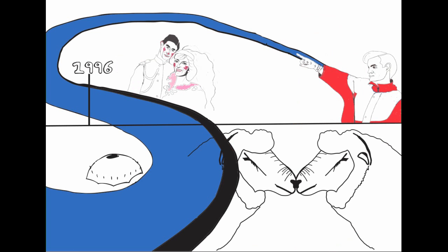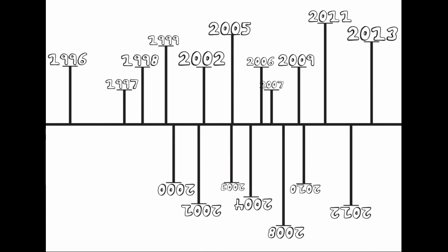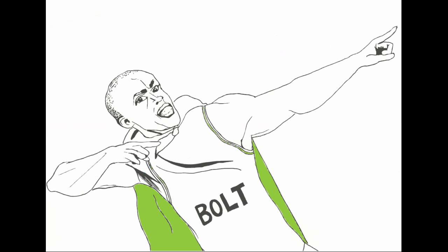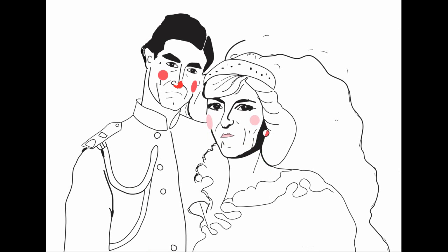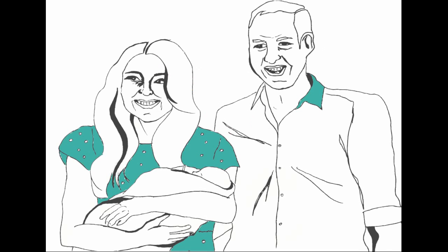If all of that seems a long time ago, it gives you an idea of the time span covered — from the beginning of the Millennium Dome to the London Olympics, from the divorce of the Prince and Princess of Wales to the birth of their grandson. You can search this archive here.